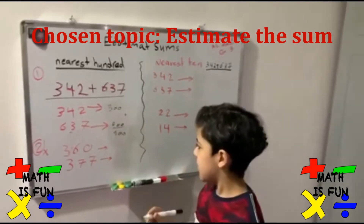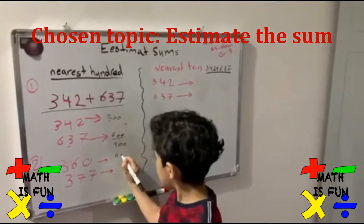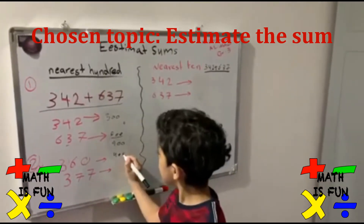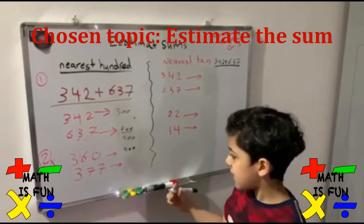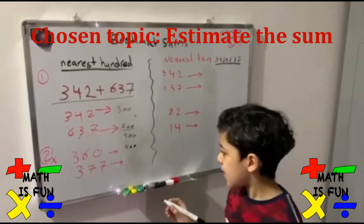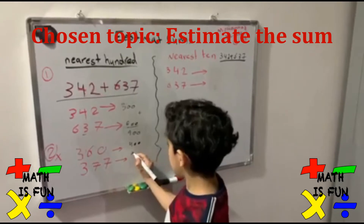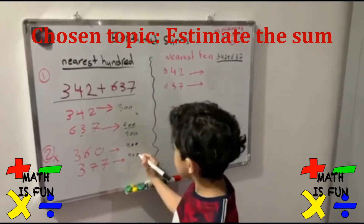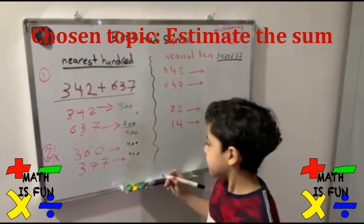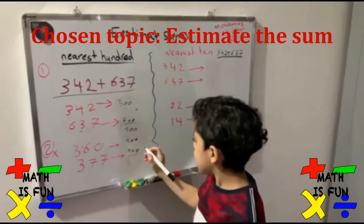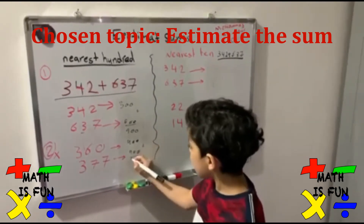Another example. 360 can be 400. Why? Because the 60 is more than 50. 377 can be 400. Why? Because the 7 is more than 50. I'm going to add them: 400 plus 400 equals 800.